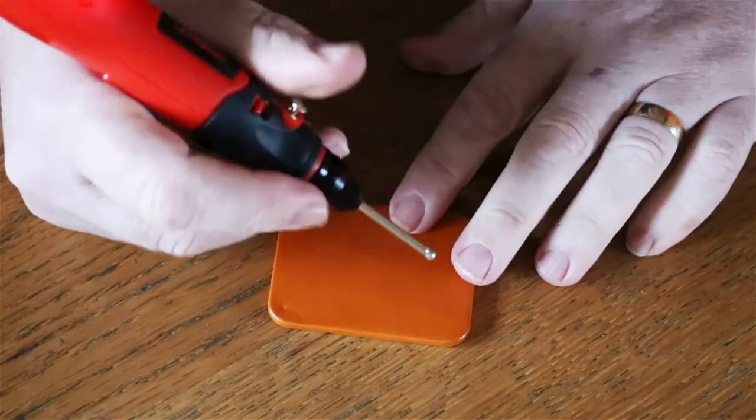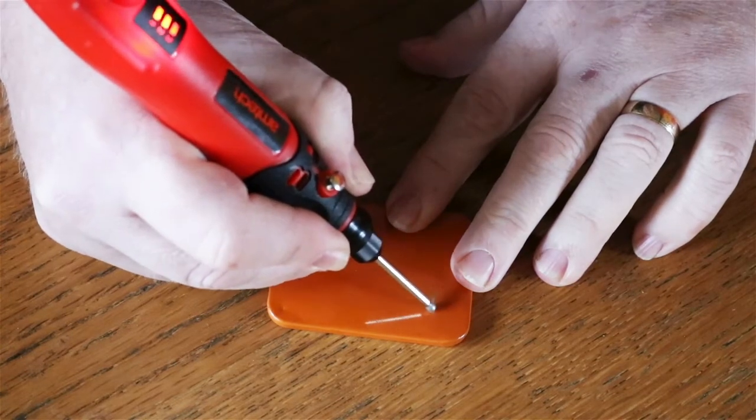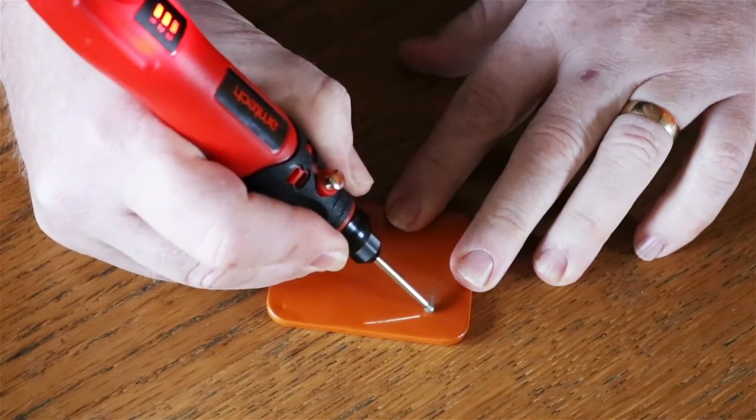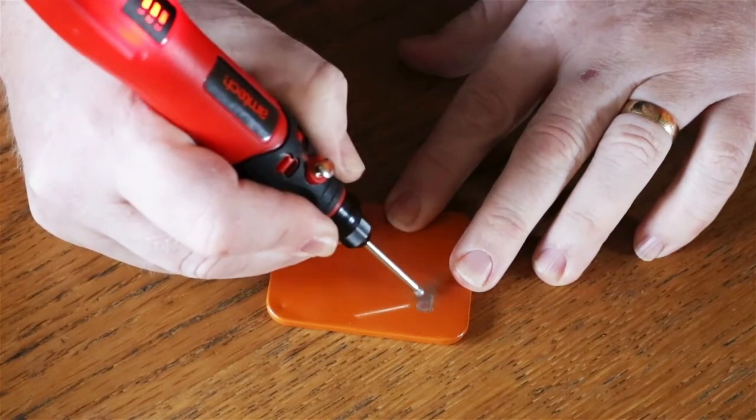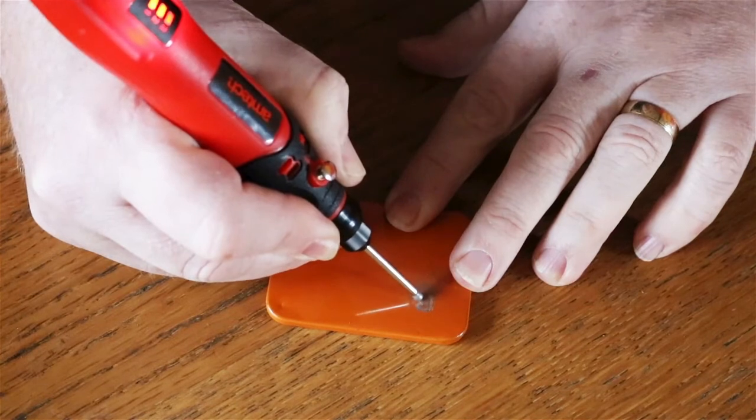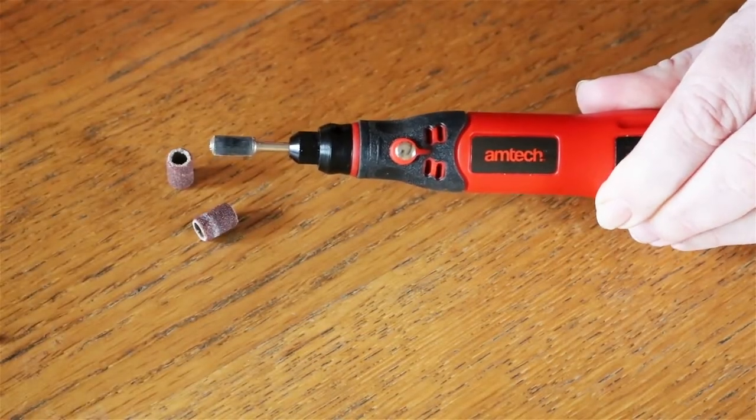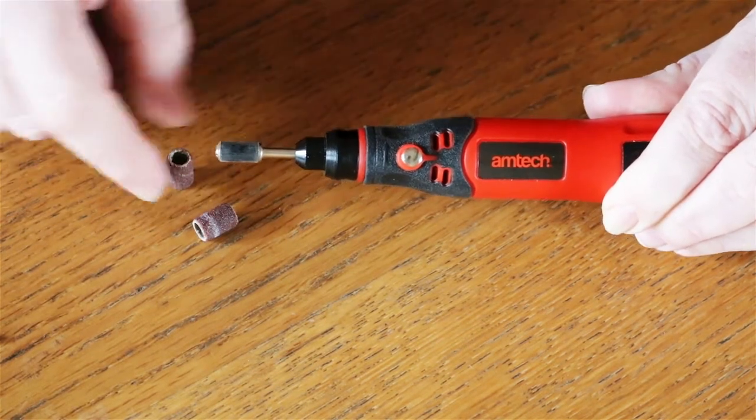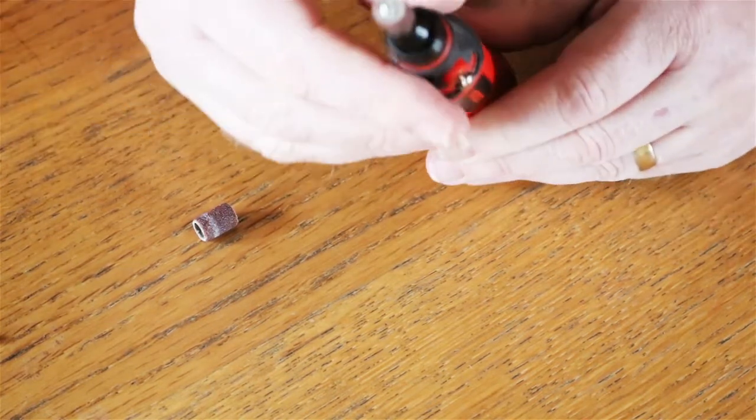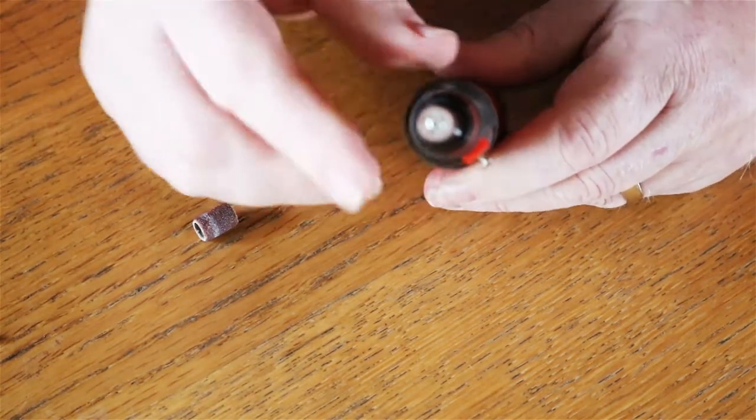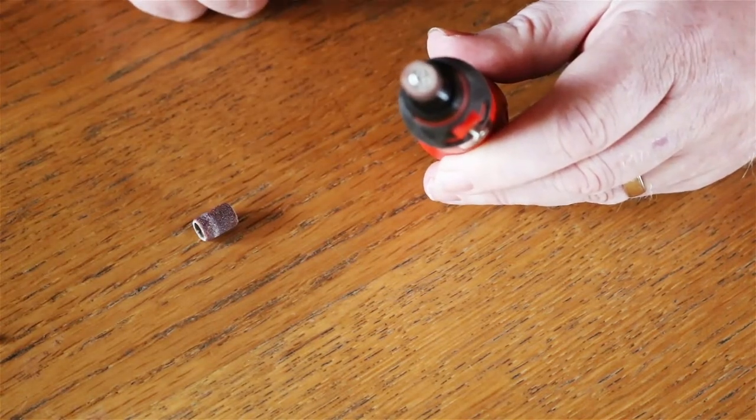You also get a sanding drum holder and two sanding drums. The sanding drums fit over the holder, and on the end there is a small screw which you tighten up and that expands the sanding drum holder, keeping the sanding drum firmly in place.